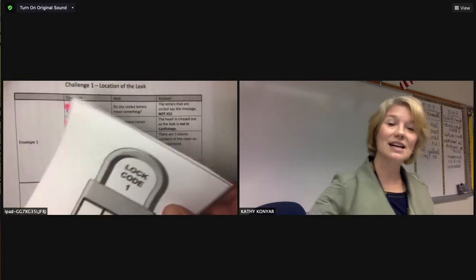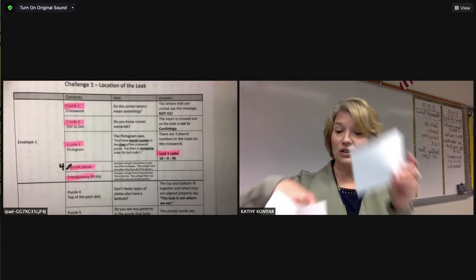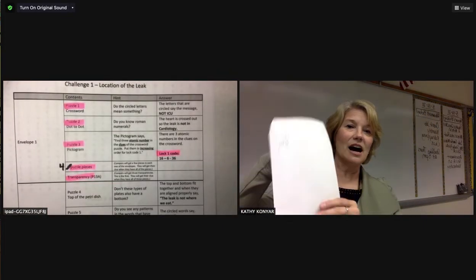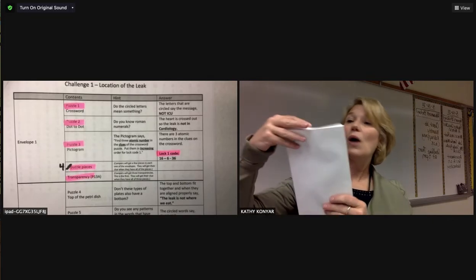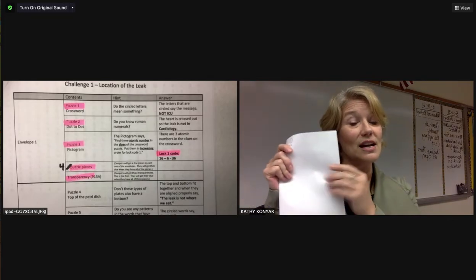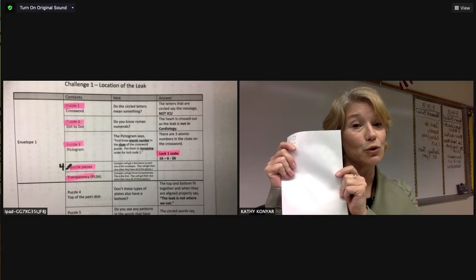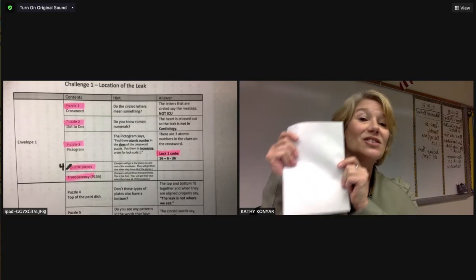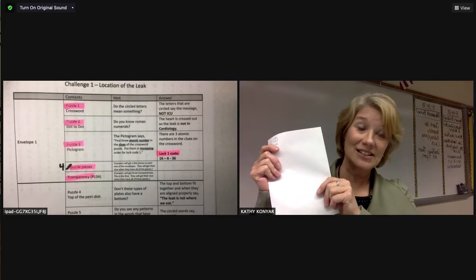So this lockbox code sheet is also going to need to go in envelope one. And now envelope one has all of the things that the camper group is going to need to get through envelope one and get to envelope two.